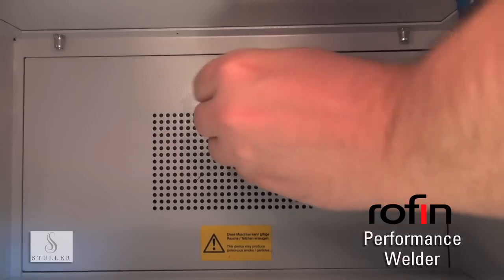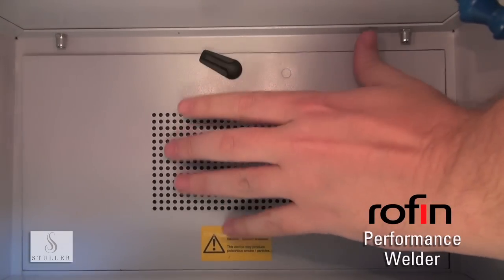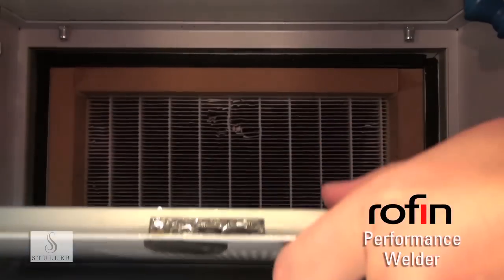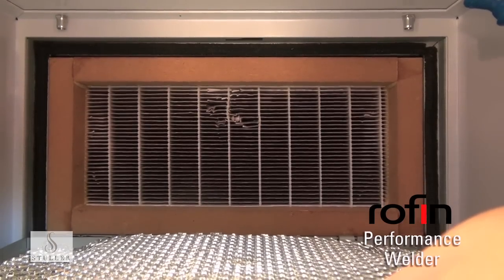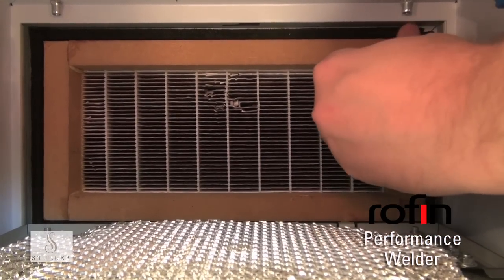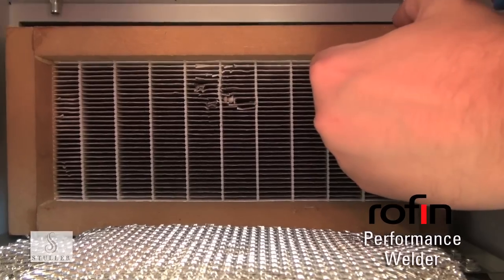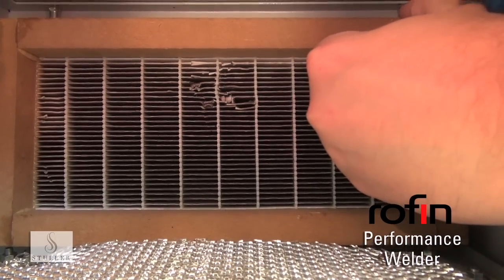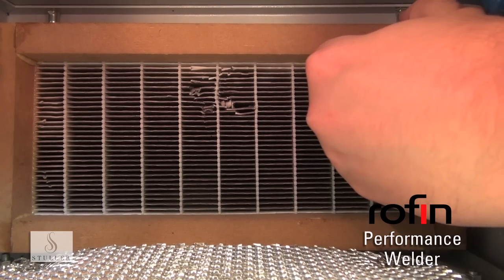The performance welder has an air filter behind the working chamber. To replace it, open the chamber, slide the lever and take off the cover. Remove the air filter. Replace the new air filter, placing the black rubber to the back. The air filter should last around three years.